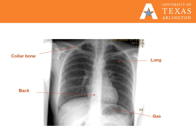Here is a chest X-ray with structures identified: the collarbone or clavicle, lung, spinal column, and the air bubble or gas in the stomach in the left upper quadrant of the abdomen.